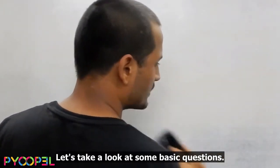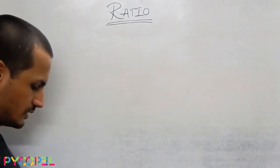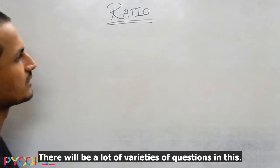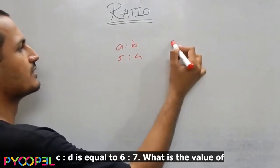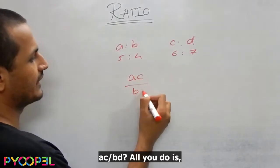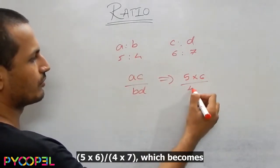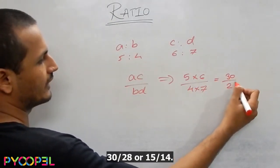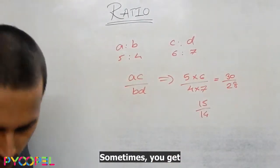Now, let us take a look at some basic questions. Sometimes you get asked straightforward questions like this: A is to B is equal to 5 is to 4, C is to D is equal to 6 is to 7. What is the value of AC upon BD? All you do is 5 into 6 upon 4 into 7 which becomes 30 upon 28 or 15 by 14.